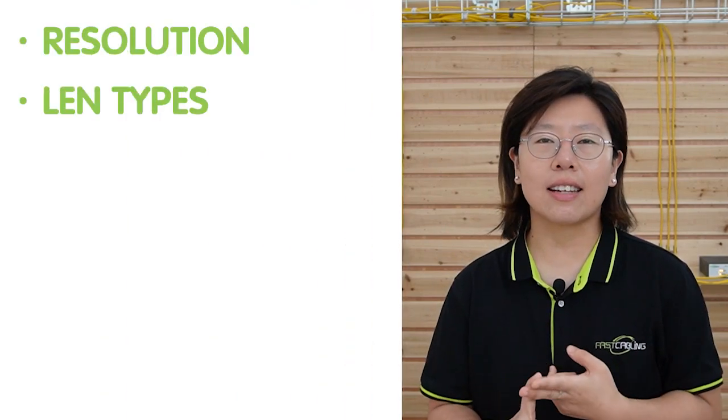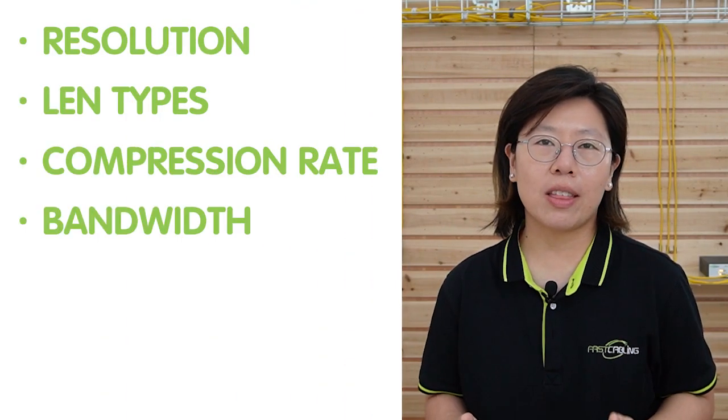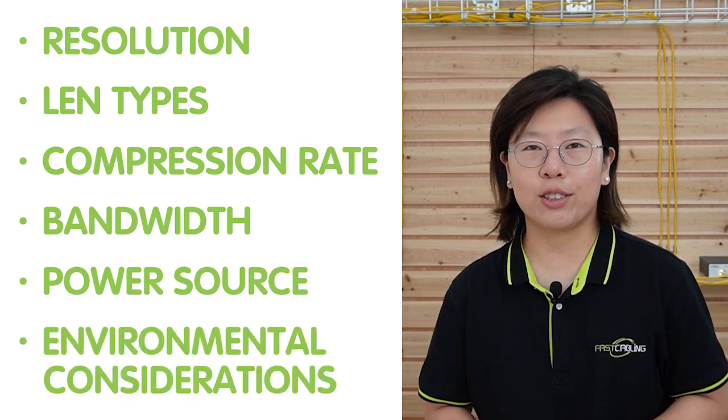There are many important factors to consider when selecting an IP camera, including resolution, lens types, compression rate, bandwidth, power source, and environmental considerations. Those factors depend on your specific needs. If you want to know more about how to choose an IP camera, check out our video on the top 5 things to know before setting up an IP camera. Thank you very much for watching.